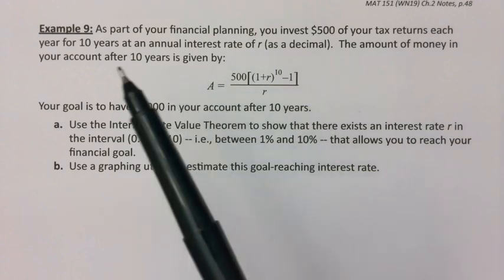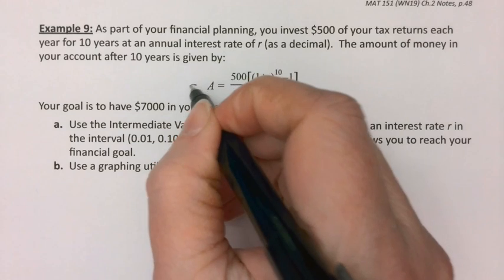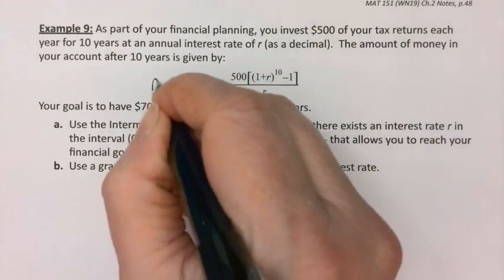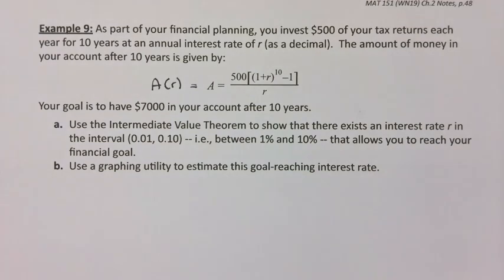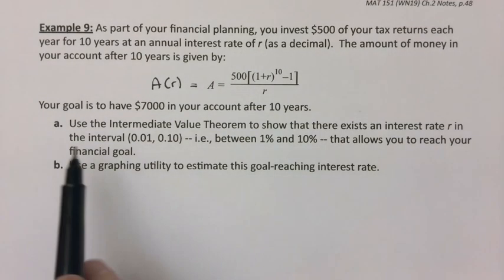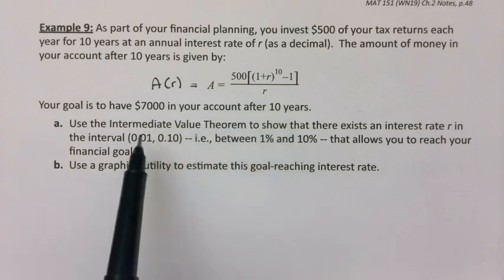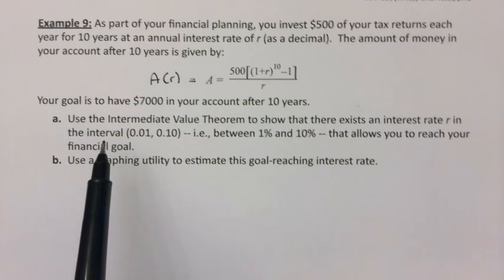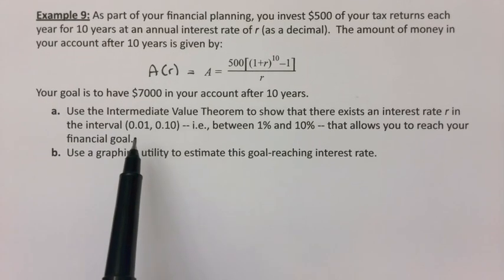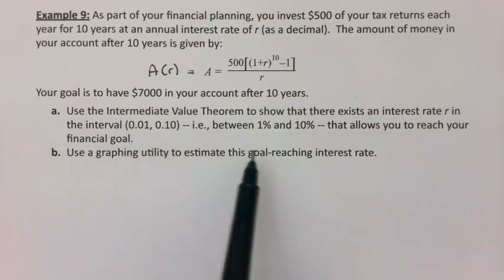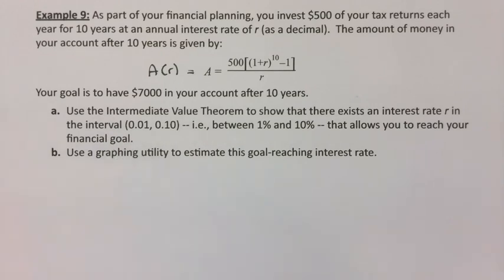The amount of money in your account after 10 years is given by this function. This is a function of R — R is your independent variable and A is your dependent variable. Your goal is to have $7,000 in your account after 10 years. We're going to prove, using the Intermediate Value Theorem, that there is an interest rate that will make this work, and then we'll actually find that interest rate.